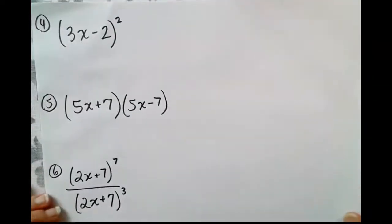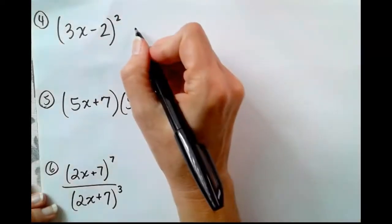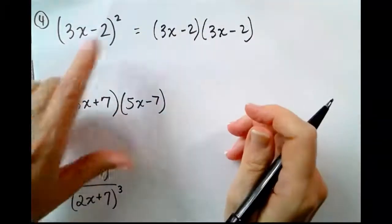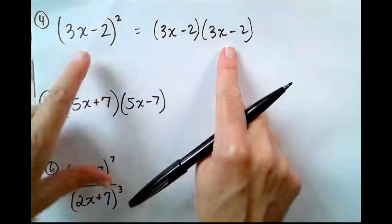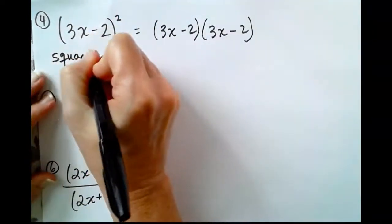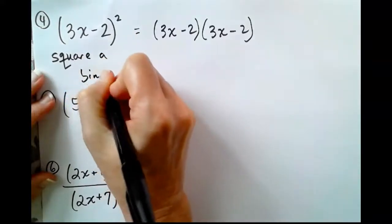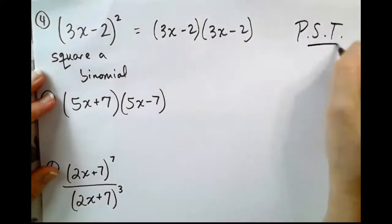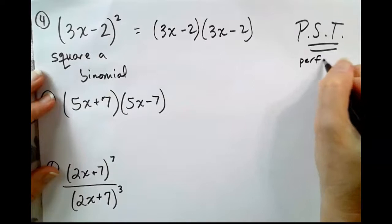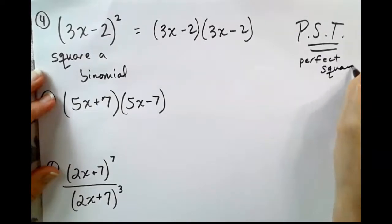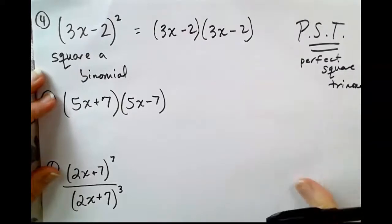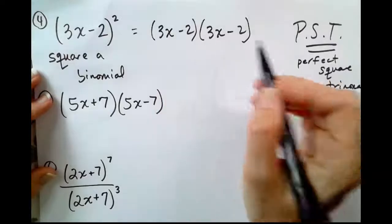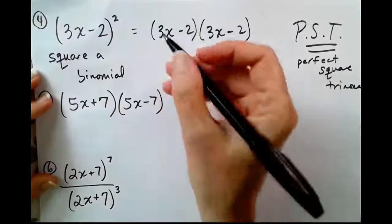Number 4. This is a binomial being squared. We saw this in the previous video when we were looking at the radicals. It would behoove you to write it out twice because we are about to square a binomial. And when we square a binomial, we get a PST, also known as a perfect square trinomial. We're still going to use the FOIL acronym to help us remember that double distribution.